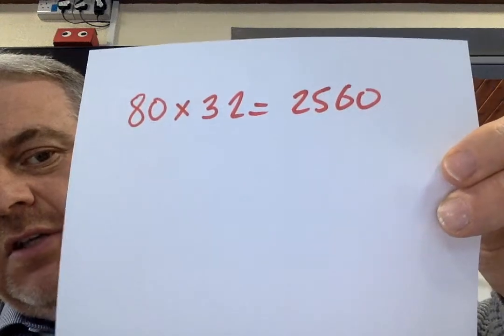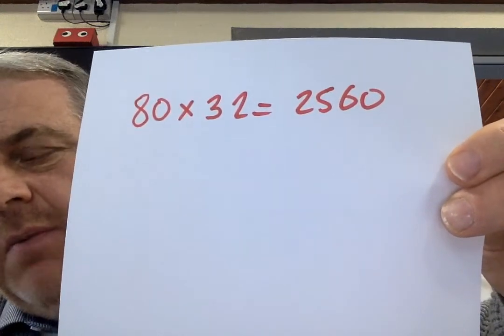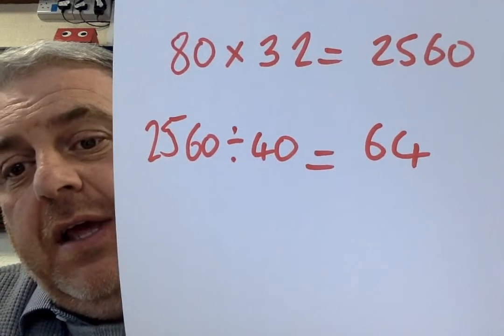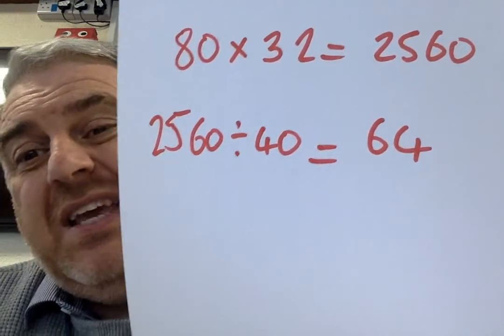The first thing I'm going to do — because the person going the fastest, the shortest time, is going to finish first — is work out how long they're going to be racing for. So 80 laps at 32 seconds a lap means they'll be racing for 2,560 seconds. I'm then going to use that number and divide it by the slower person's lap time. So 2,560 divided by 40 means they will have completed 64 laps.